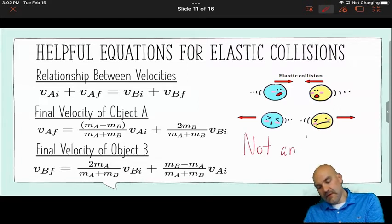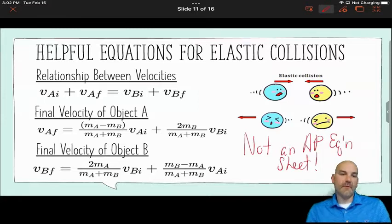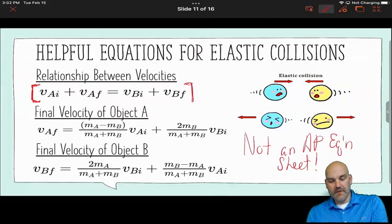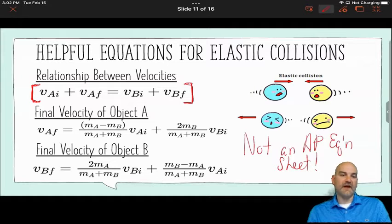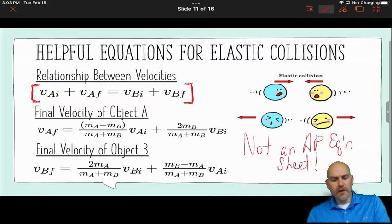Now, these are not on the AP equation sheet, okay? So you're going to have to memorize these. So the first thing is very important. Note that the sum of the velocities of each object, they're equal to each other. So that's one thing you can do. The second thing is if I need to find the velocity of object A, and I don't have enough information, or at least I don't think I have enough information, I can use the equation that you see there.